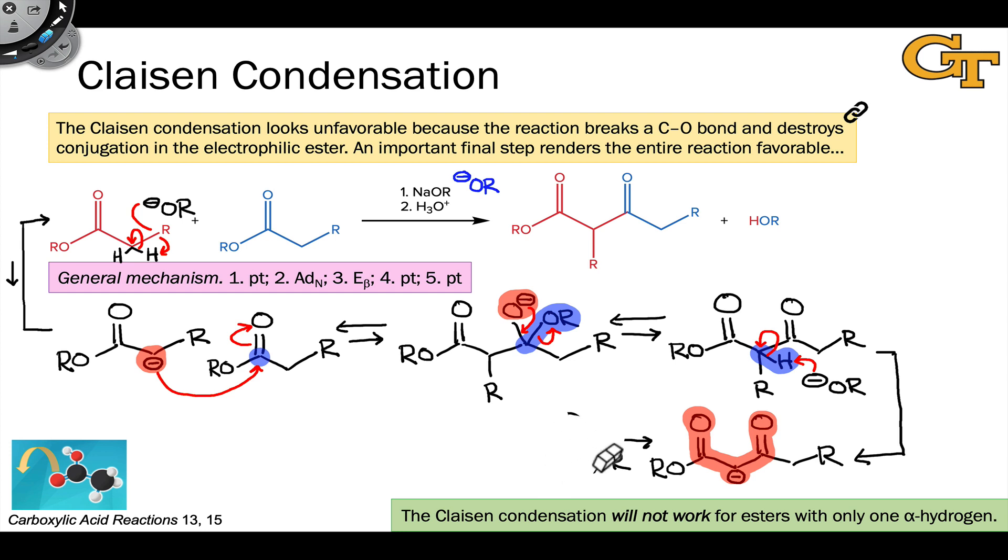It's got a very negative ΔG. This point is actually the endpoint under basic conditions. If we want to isolate the neutral beta-ketoester product, we have to use acidic workup. Treatment of the reaction mixture with acid protonates that central alpha carbon and gives us the neutral beta-ketoester product.